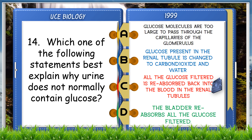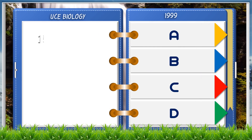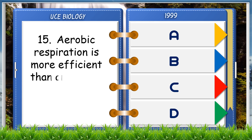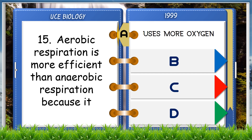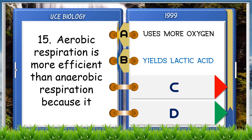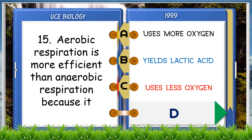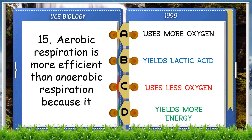Aerobic respiration is more efficient than anaerobic respiration because it: A. Uses more oxygen, B. Yields lactic acid, C. Uses less oxygen, D. Yields more energy. The answer is D, yields more energy.